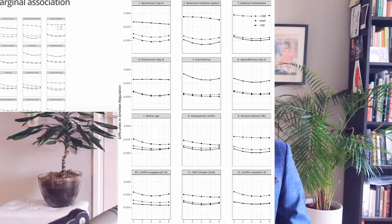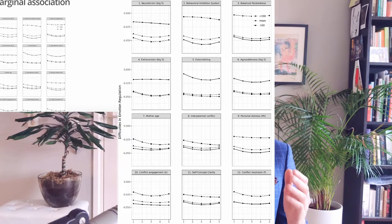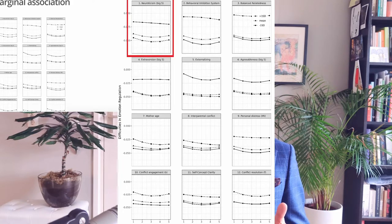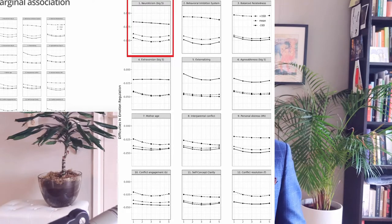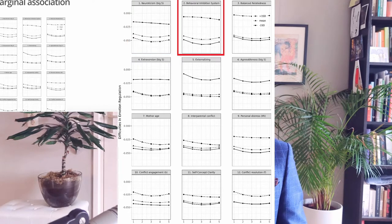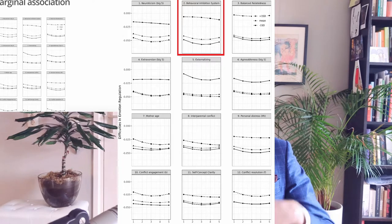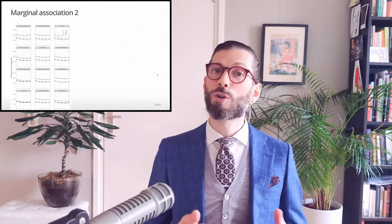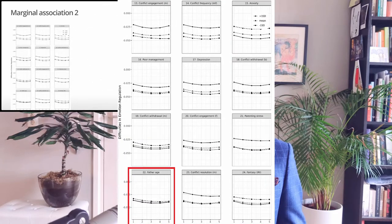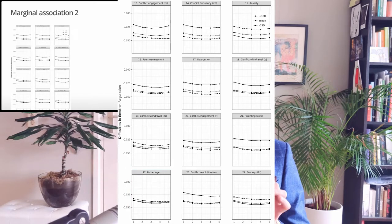So what we see here are the marginal associations of each predictor, sorted by importance, with trajectories of emotion regulation development. I plotted the expected trajectory of difficulties in emotion regulation for plus one standard deviation, the mean, and minus one standard deviation on each predictor. For example, adolescents who were one standard deviation higher than the average in neuroticism had greater difficulties in emotion regulation throughout adolescence. We also see that adolescents who had minus one standard deviation on the behavioral inhibition system also experienced greater difficulties in emotion regulation. Note that very frequently it's just one of these levels that differs from the other two, and that suggests non-linear effects of many of these predictors.